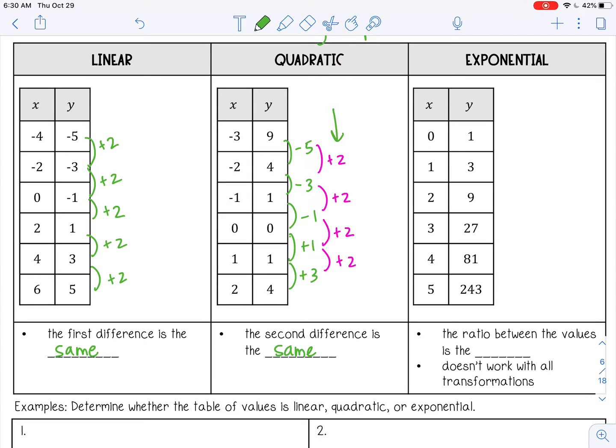All right, for exponential, let's check all of them are the same. So always check for linear first. From 1 to 3, that's plus 2. From 3 to 9, that's plus 6. From 9 to 27.